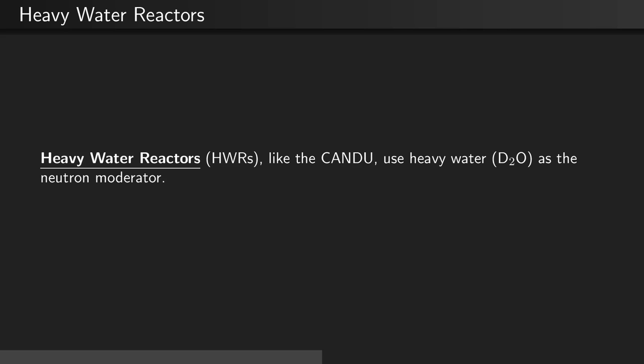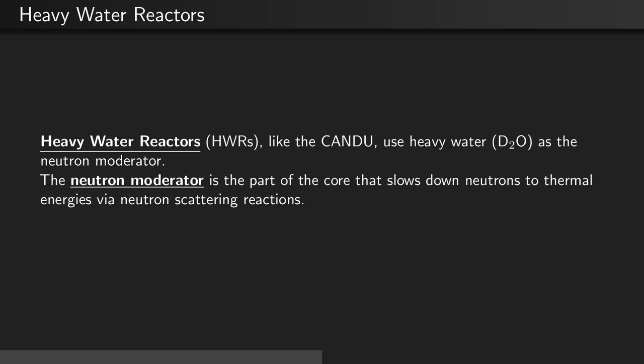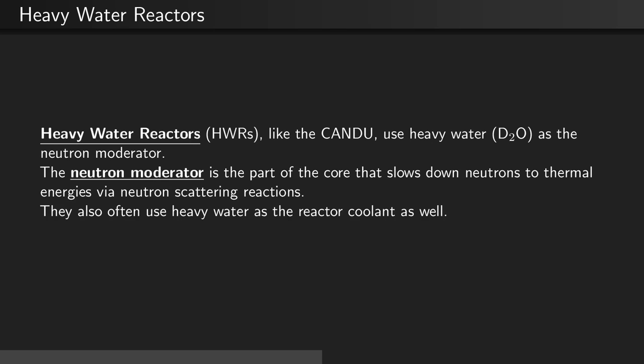Heavy water reactors, or HWRs, like the CANDU, use heavy water — deuterium-2 oxygen — as the neutron moderator. The neutron moderator is the part of the core that slows down neutrons to thermal energies via neutron scattering reactions. They also often may use heavy water as the reactor coolant.